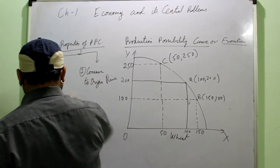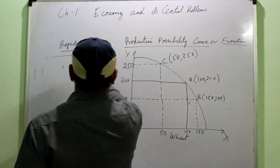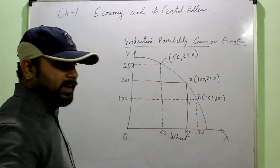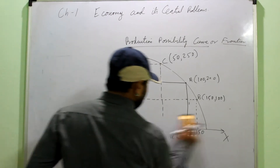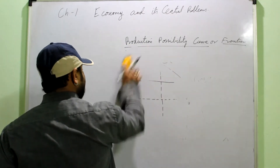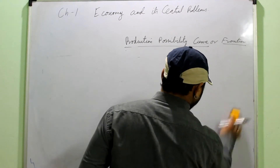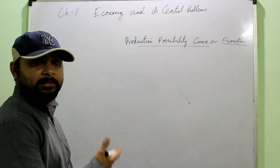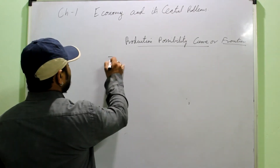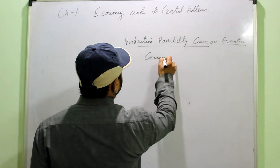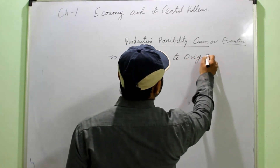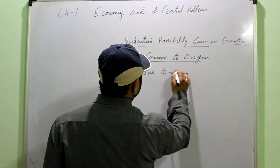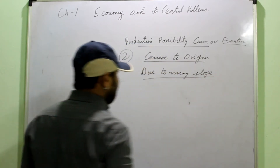Now for the second property — concave to origin. We have already discussed that it depends on the rate at which the slope is changing. Whenever the slope rises as we move from one point to another, the curve is concave. The basic reason is the rising slope. To understand this, we first need to know what the slope of the PPC is. The slope of any curve is equal to delta Y divided by delta X — that is, change in variable Y over change in variable X.